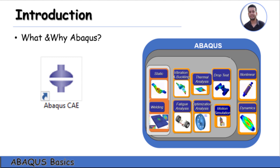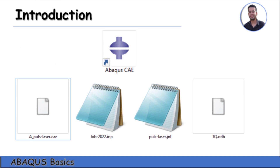First, what is Abaqus? Abaqus is one of the most popular finite element analysis software available. With Abaqus you can solve problems from relatively simple linear analysis to the most challenging non-linear simulations. Abaqus contains an extensive library of elements that can model virtually any geometry. It provides a complete modeling and visualization environment for your analysis, with direct access to CAD models, advanced meshing, visualization, and more. You need Abaqus to deal with simulation challenges like statics, dynamics, welding analysis, fatigue, and most mechanical test applications.